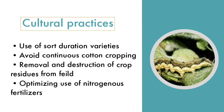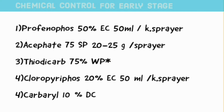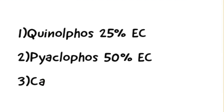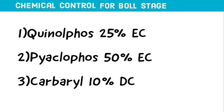Chemical Control: For early stages, use profenofos or acephate or thiodicarb or chlorpyrifos or carbaryl. For the maturity stage or boll stage, use fenvalerate or cypermethrin or carbaryl.